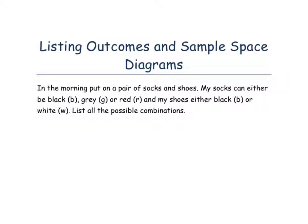Listing outcomes and sample space diagrams. These are two different skills that are fairly simple in GCSE exams to do with probability. In the morning, put on a pair of socks and shoes. My socks can either be black, grey, or red and my shoes either black or white. List all the possible combinations.